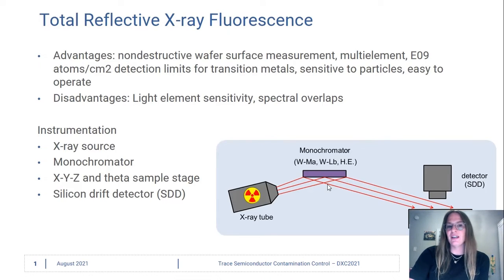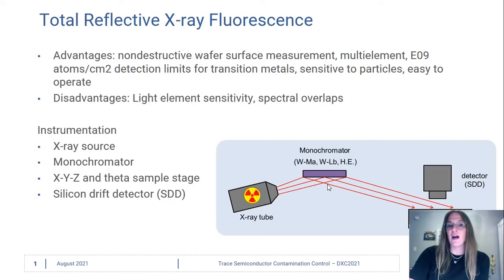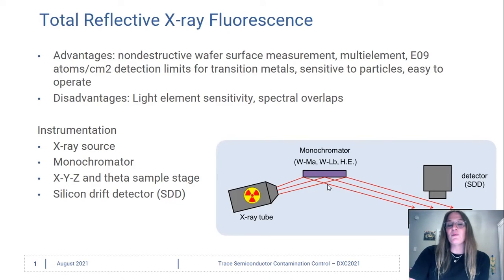The instrumentation includes an x-ray source and a monochromator for our incident x-ray beam. It also has a very precise sample stage with x, y, z, and theta movement, so we can have very precise and repeatable alignment of the wafer substrate to the x-ray beam. Also a silicon drift detector.